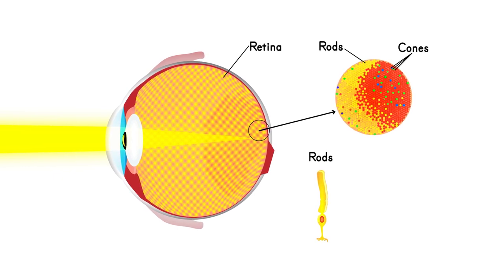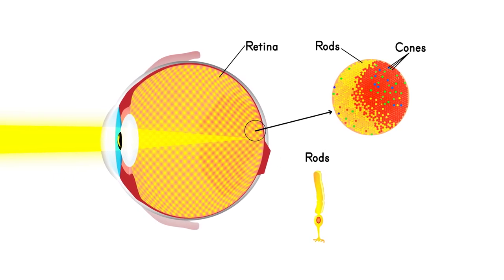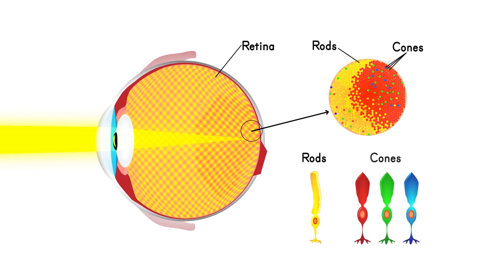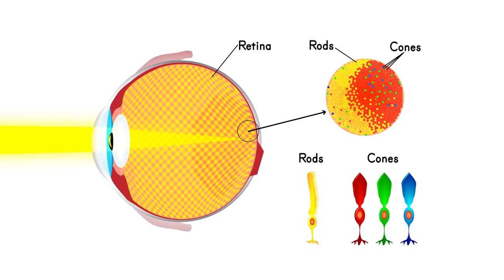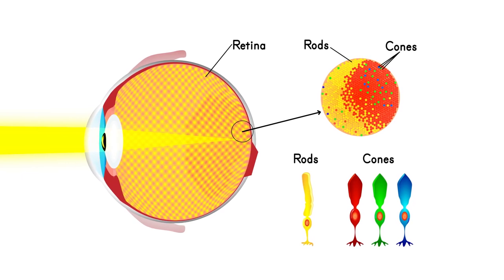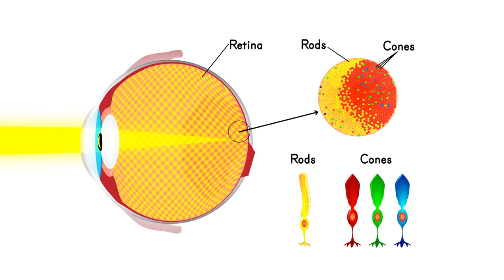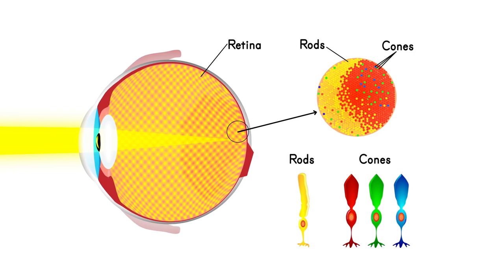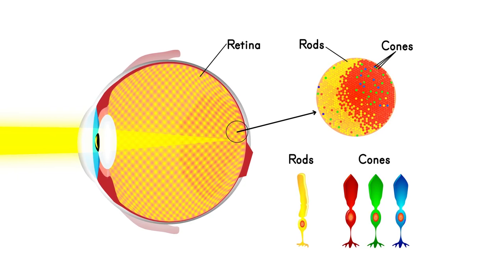This is why, at night, everything appears in shades of grey. Cones, on the other hand, are responsible for vision in higher levels of light. They are capable of color vision and separate what they see into different color categories: green, red, and blue.